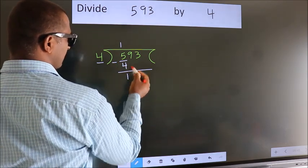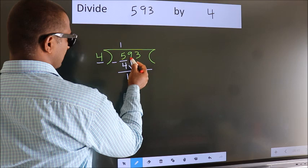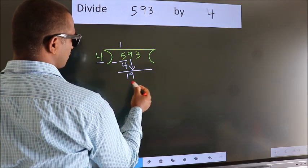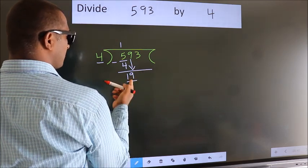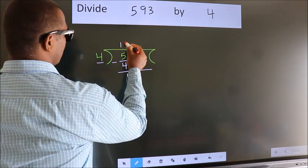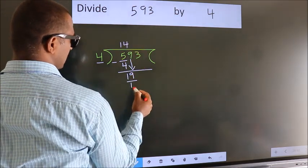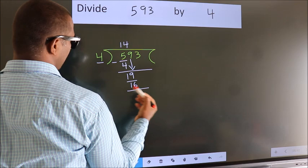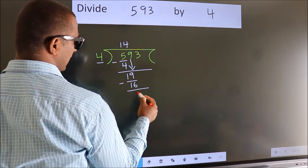After this, bring down the beside number. So 9 down, so 19. A number close to 19 in the 4 table is 4 fours, 16. Now we subtract. We get 3.